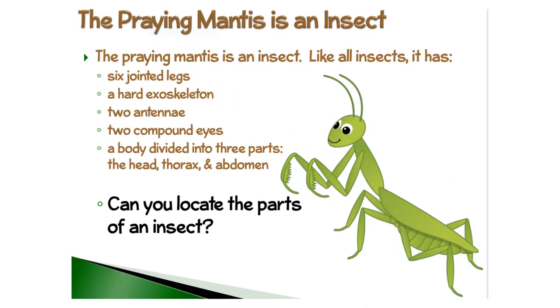The praying mantis is an insect. Like all insects, it has six jointed legs, a hard exoskeleton, two antennae, two compound eyes, a body that is divided into three parts: the head, the thorax, and the abdomen.